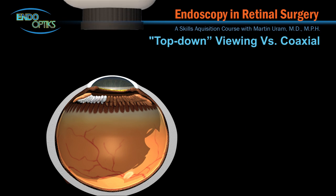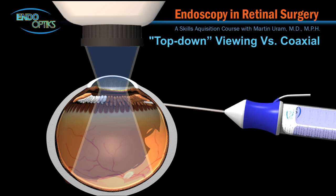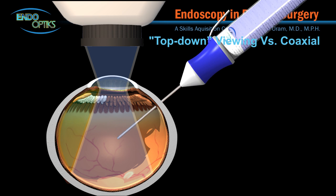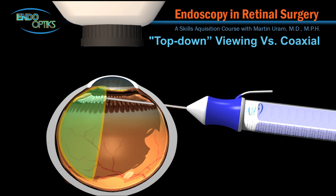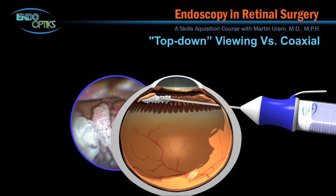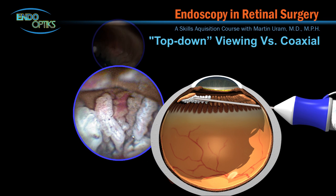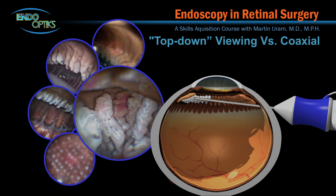Consider that the operating microscope provides a top-down, limited field of view. Endoscopy can create this top-down view as well as one that is oblique, coaxial, or from an inferior position anywhere within the ocular interior, and always with a wide field of view. This ability can provide the surgeon with unique views of the intraocular pathology, engendering novel treatments that are not possible by conventional operating microscope imaging.